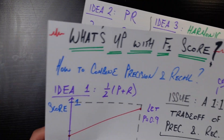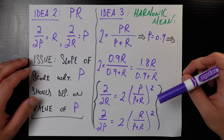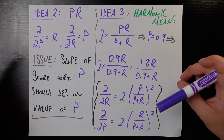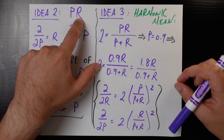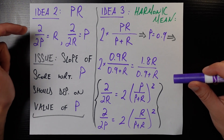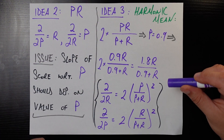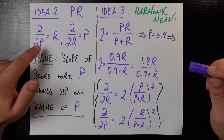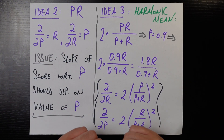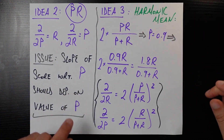Let's engineer this one step further and look at idea number two. Previously we looked at an additive form of precision and recall. What if we look at a multiplicative form? So what if our candidate F1 score metric is just precision times recall? That looks very simple, and if this works it would be very easy to interpret and understand. Let's take the partial derivatives of this candidate function with respect to precision and recall.